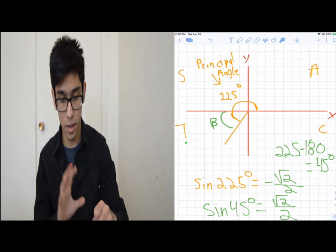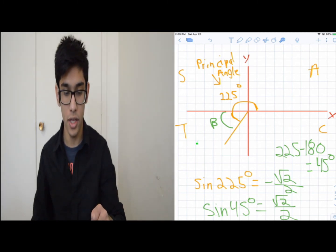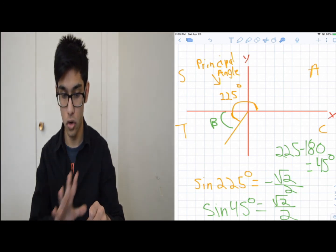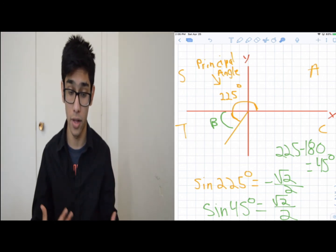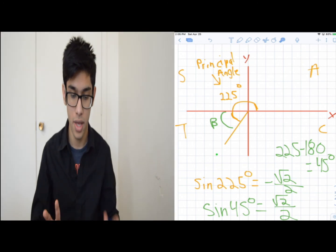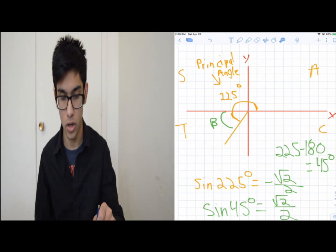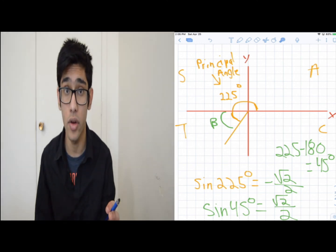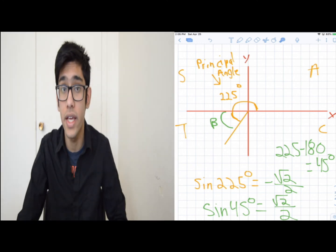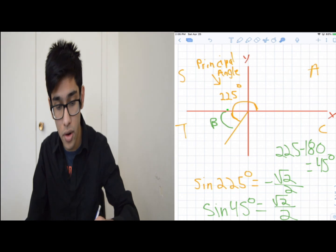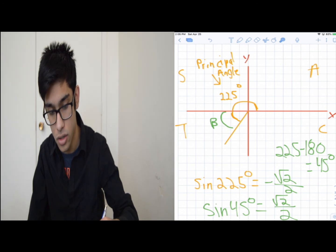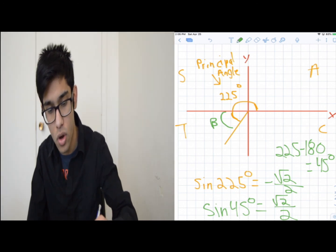If you can intuitively understand this, you'll be good with trigonometry for angles more than 90 degrees. When you have a large principal angle, find the related acute angle by starting from the x-axis. Let me do one last example.